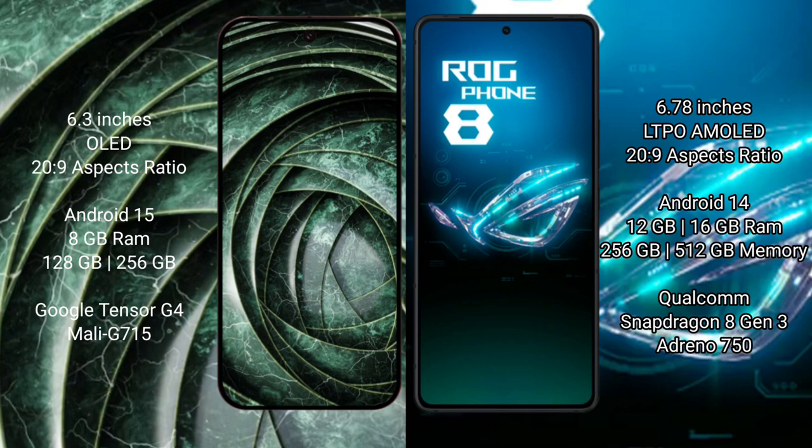The Google Pixel 9a runs on the Android 15 operating system, while the ASUS ROG Phone 8 runs on Android 14. The Google Pixel 9a comes with 8GB RAM and 128GB or 256GB of internal storage, powered by the Google Tensor G4 processor with an integrated Adreno GPU.